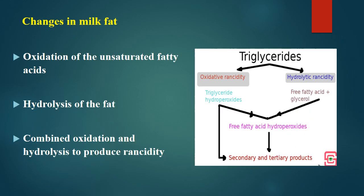Another category of chemical changes that happens in dairy products relates to fat. Since many dairy products are fat-rich, the most common change is oxidation of unsaturated fatty acids. Sometimes there will be hydrolysis of fat — milk fat is present as triglycerides, where one glycerol molecule has three fatty acid molecules bound in ester linkage. Due to microbial growth and specific enzymes, the ester linkage can break and produce free fatty acids. Combined oxidation and hydrolysis together can produce rancidity.